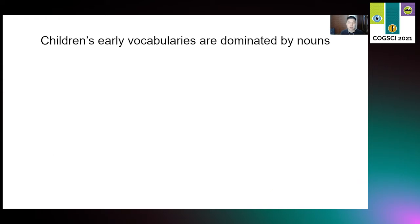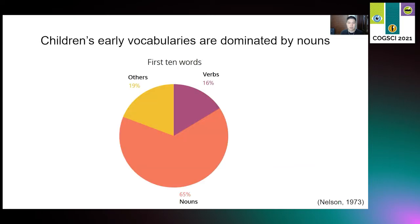Across the world's languages, children reliably learn nouns more easily than verbs. According to a corporate study by Nelson, verbs comprise only 16 percent of the first term words learned by children, while nouns comprise 65 percent. So what causes the dominance of nouns in children's early vocabularies?